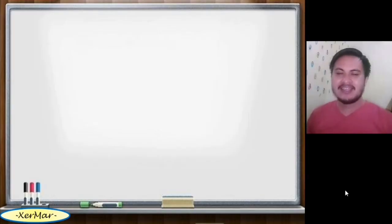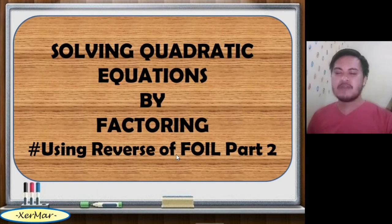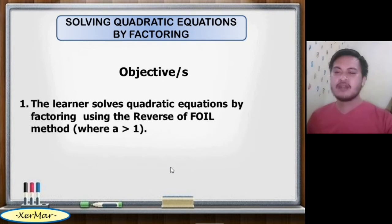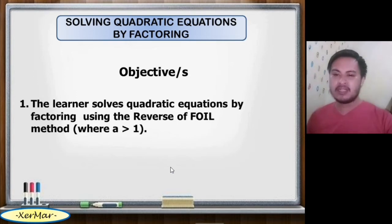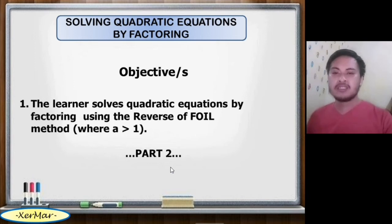In this video, I will discuss solving quadratic equations by factoring using the reverse FOIL method, part 2. The objective is: the learner solves quadratic equations by factoring using the reverse FOIL method where a is greater than 1. This is part 2 of our lesson since we are done already with part 1, wherein the value of a is equal to 1.